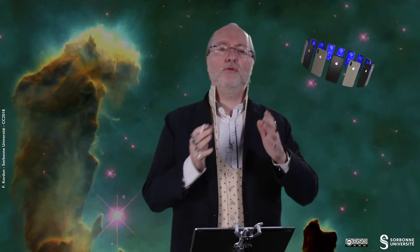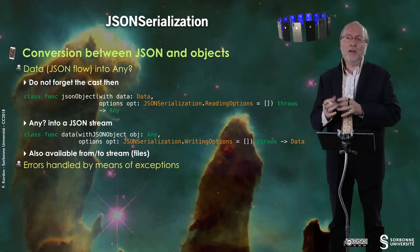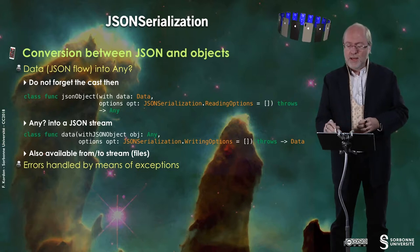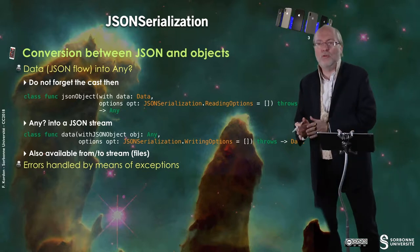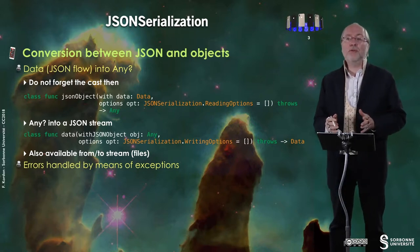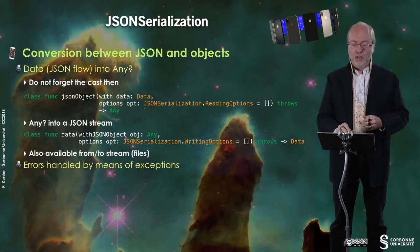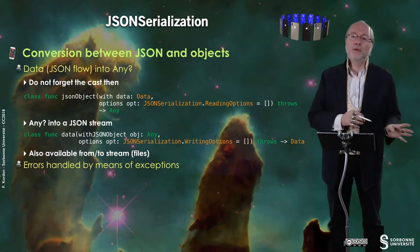There is a conversion mechanism between JSON and object. So if you have data, or NSData, which is a JSON flow, you can convert it into Any question mark — question mark because it's an optional, since if there is a problem you get nil. You have to do yourself the cast into what you want to have. You have this function, which is a class function from JSONSerialization, which is JSON object with data, and then you have some options. And if there is a problem, of course, it also throws an exception.